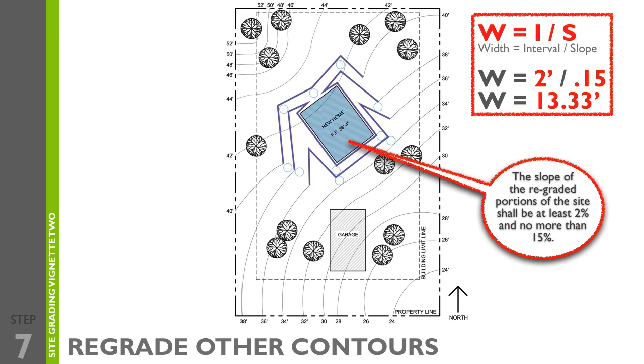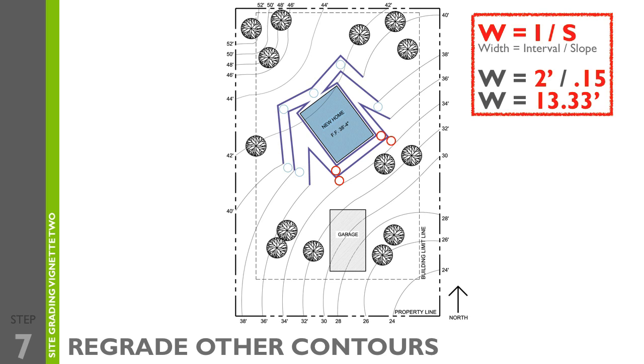Using sketch circles, make sure you space your contour lines a minimum of 13.33 feet apart. Otherwise, your slope would be greater than 15%, which would exceed the program maximum because it would be too steep. You can also use sketch lines to stay within the minimum slope values using the same formula.